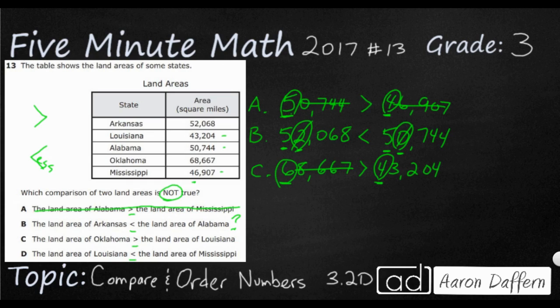And since it's larger, we don't need to evaluate the thousands, hundreds, tens, or ones. That one is good to go. All we need to do is disprove D. And we are good.